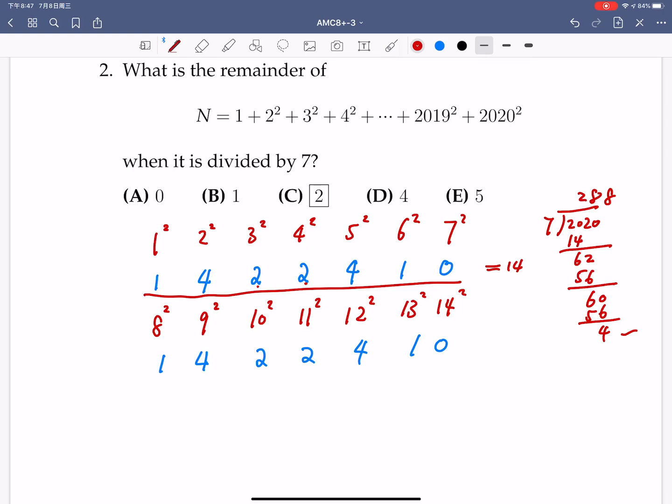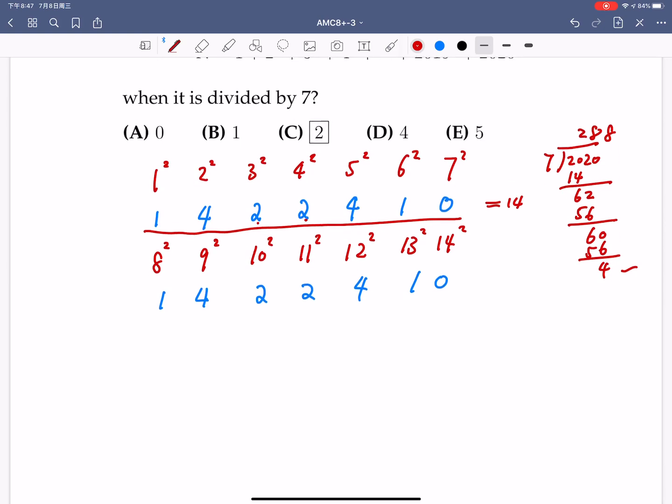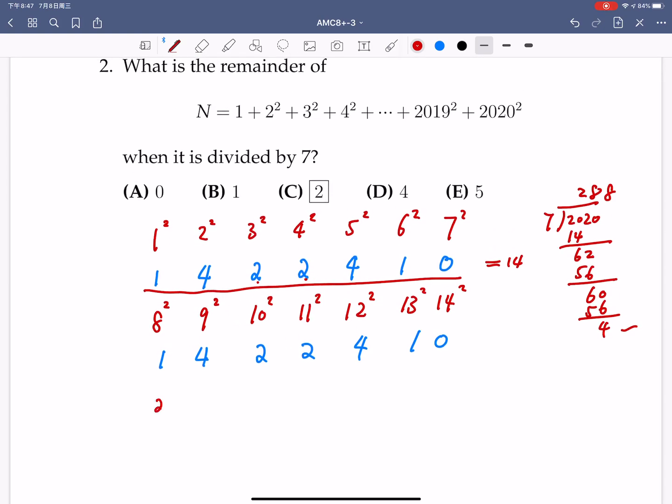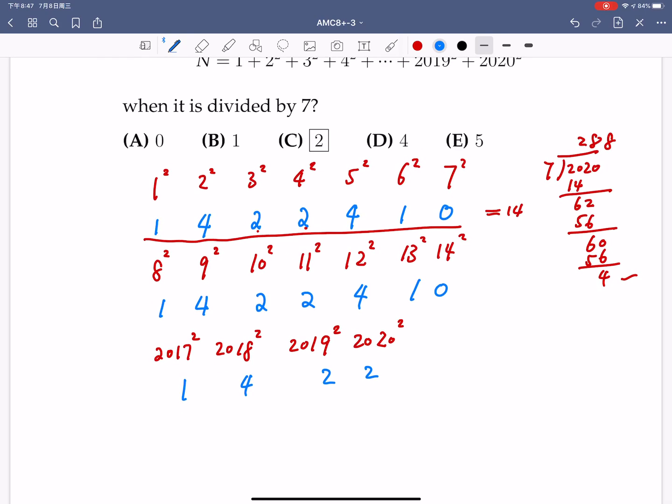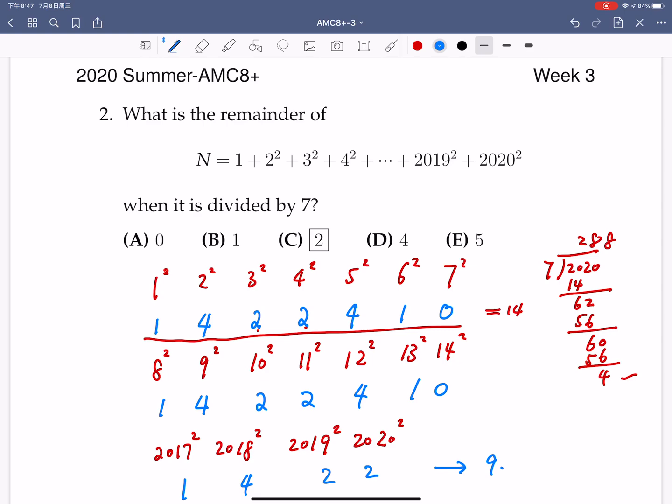So this pattern repeated 288 times, and the last four terms of the expression would be 2017 square, 2018 square, 2019 square, and 2020 square. And the remainder for this would be 1, 4, 2, 2. And if we add these remainders, we would get 5, 7, we would get 9. And 9 divided by 7 has remainder 2. So the final answer for this capital N divided by 7 has remainder 2. So the answer is C.